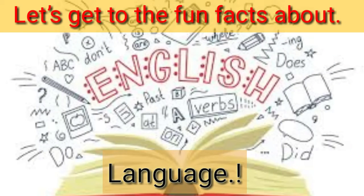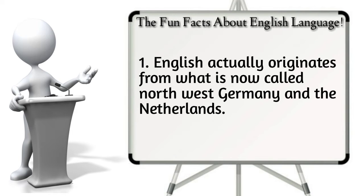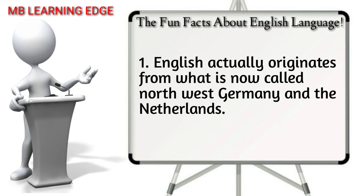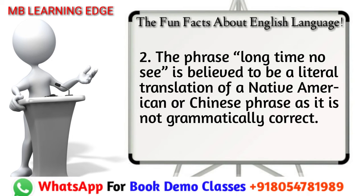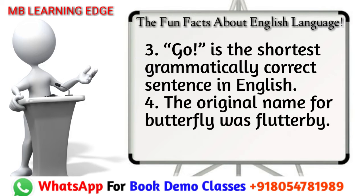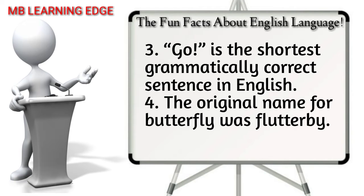Let's get to the fun facts about the English language. 1. English actually originates from what is now called Northwest Germany and the Netherlands. 2. The phrase 'long time no see' is believed to be a literal translation of a Native American or Chinese phrase, as it is not grammatically correct. 3. 'Go' is the shortest grammatically correct sentence in English.